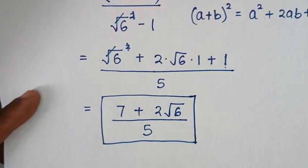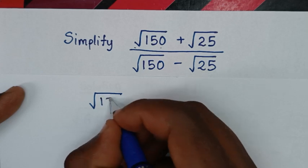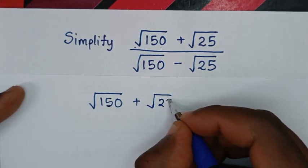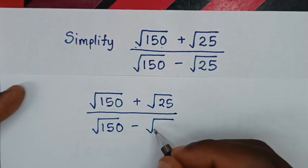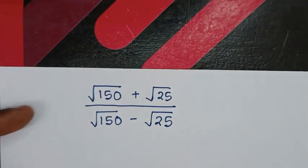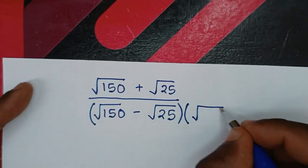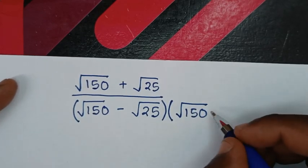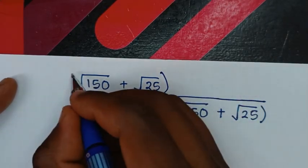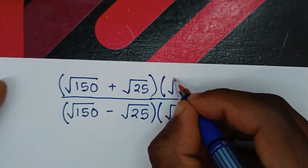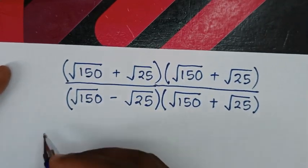Or, to solve in another method — from our problem, let's write our problem here, which is: square root of 150 plus square root of 25, over square root of 150 minus square root of 25. Now, into this method, we'll start by rationalizing the denominator, so into the denominator we'll multiply by square root of 150 — here we have minus, so it will be plus square root of 25. Also, in the numerator, we'll multiply by square root of 150 plus square root of 25.